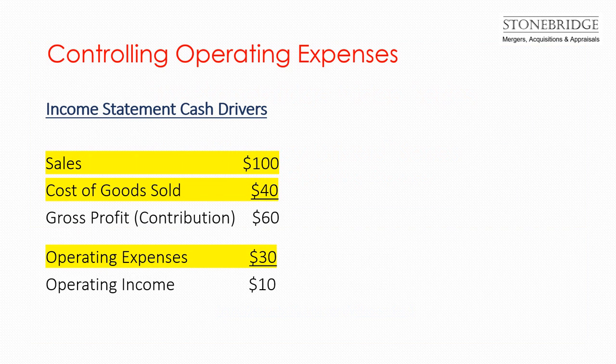We continue reviewing the seven cash drivers of a business to optimize profits and cash flow. The theory is the same for all the drivers: look at the performance history to determine the optimal percentage, ratio, or days for each cash driver, and take action to get back to that level of performance and then maybe surpass it.